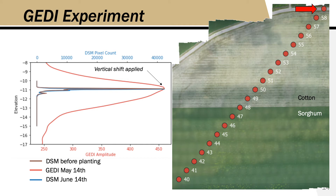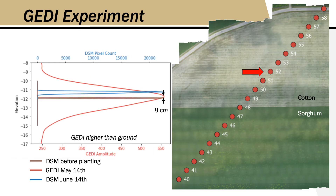After applying the vertical shift correction, the GEDI return matches both the pre-planting pseudo return and the post-growth pseudo return. Now let's look at returns within the crop. In the middle of the cotton, we were expecting a bimodal distribution but it's clearly not present — there's just a Gaussian return. From GEDI alone, we cannot indicate both the top of canopy and the ground.